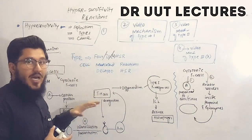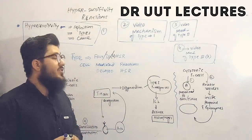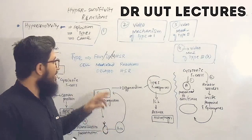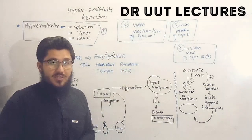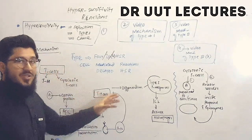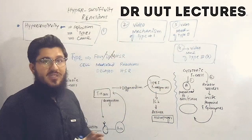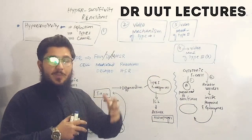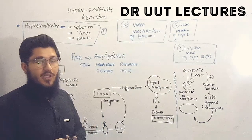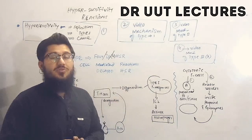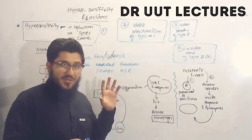Type 4 hypersensitivity reactions are also known as cell-mediated reactions, and by another name, delayed hypersensitivity reactions. They are called cell-mediated reactions because this reaction actually involves cells — the T cells. In the first, second, and third types, antibodies were involved, but in type 4, cells are involved, which is why these are known as cell-mediated reactions.